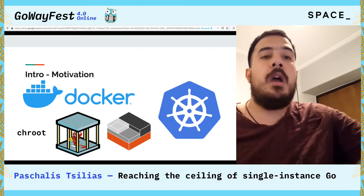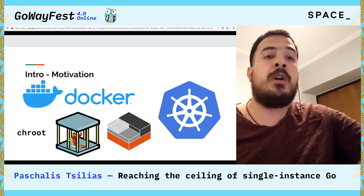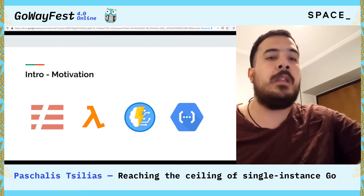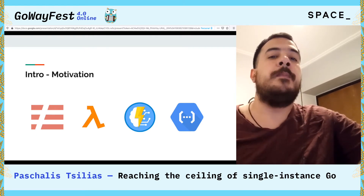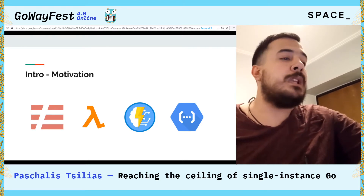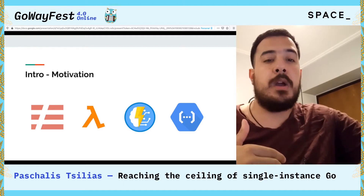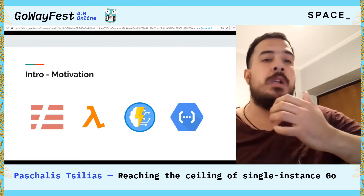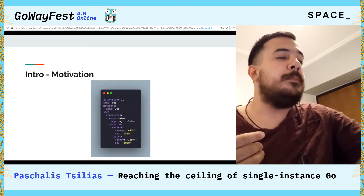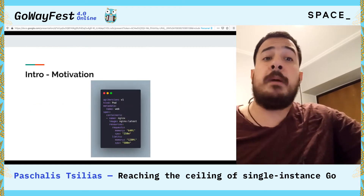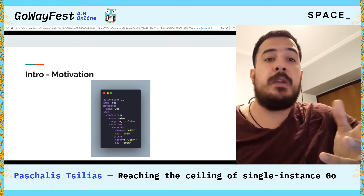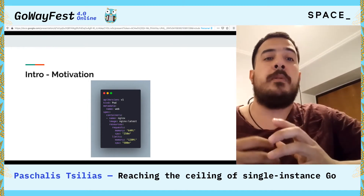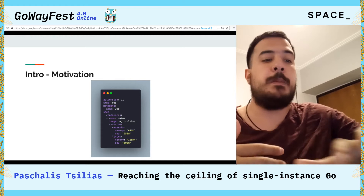Naturally, no one deploys on bare metal anymore, and that's for good reason. While all this is true, we seem to have moved into another layer of abstraction yet, with things like serverless, AWS Lambda, or Azure GCP functions, where the boundaries of what's a function or what's a microservice are getting a little blurry.